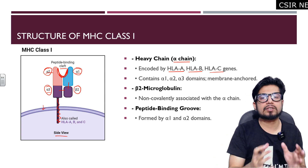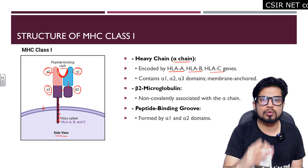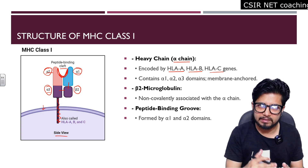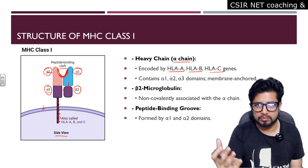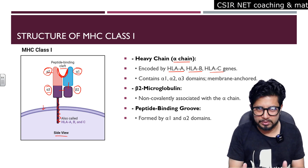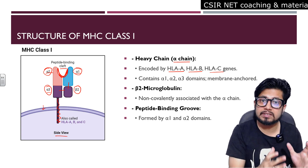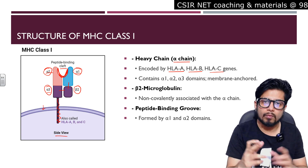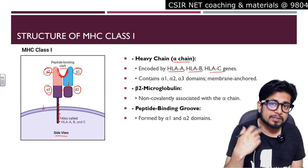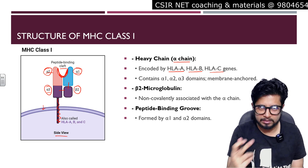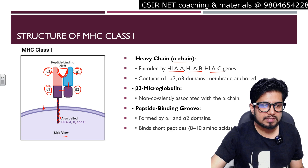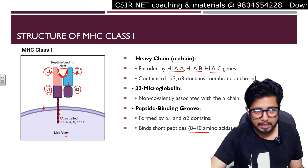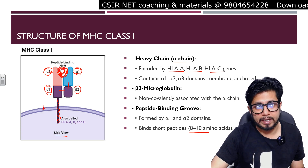The role of major histocompatibility complexes is to showcase a fragment of peptide — either endogenous (self-origin, inside the cell) or exogenous (from outside, such as a pathogen). For MHC class 1, the endogenous fragment of peptide is showcased, while for MHC class 2, exogenous or pathogen peptide fragments are showcased. This peptide binding cleft binds very short peptides, 8 to 10 amino acids long, and showcases them to other immune system cells.